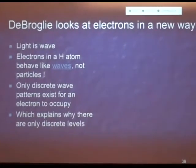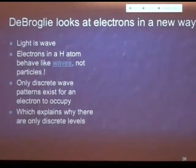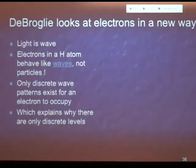And he saw these discrete patterns in the atom, and he says, that tells me that it's not planets going around the sun, but it's waves that are forming in orbit.